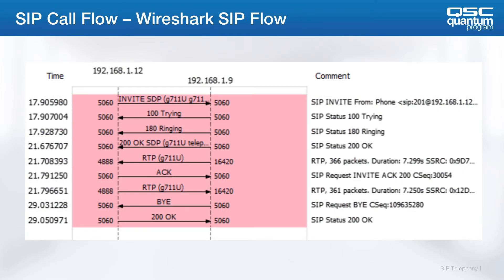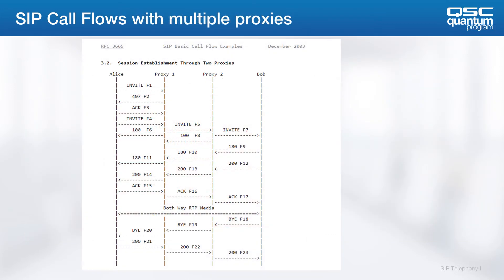This shows another view of a call setup in Wireshark using the call flow view. One thing to note is that you can capture this using Wireshark on a PC or laptop if you're connected to the same network, or if you have a capture utility on the Q-SYS core that will capture the traffic. These captures are referred to as PCAPs. This will also capture the audio streams, which you can play back if you are having audio quality issues. This shows a call captured on an external device showing two different proxies or call servers involved. A typical SIP call will usually go through one or more devices before it reaches its destination.